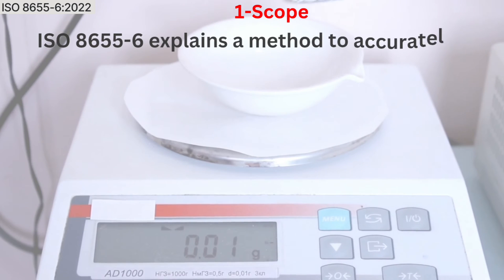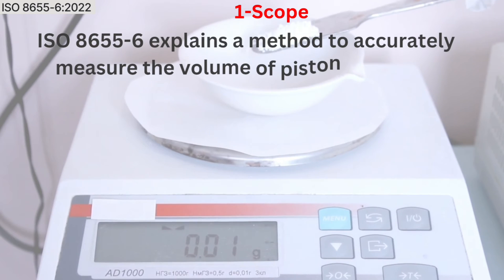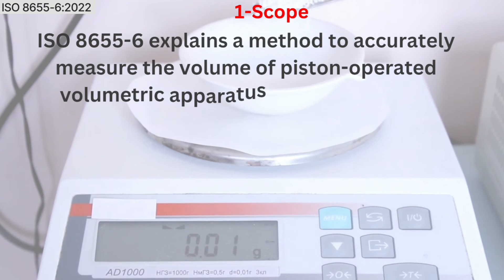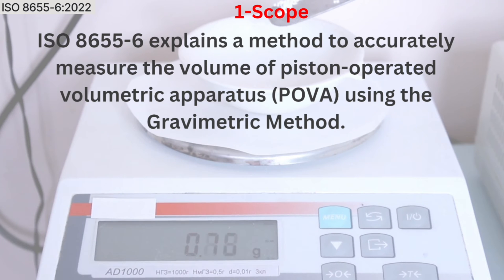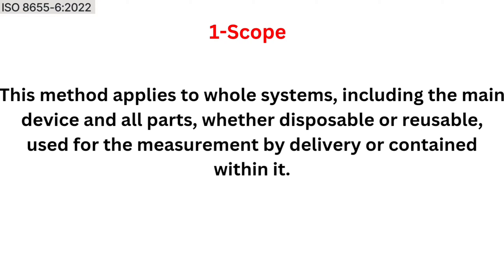Section 1, Scope: It explains a method to accurately measure the volume of piston-operated volumetric apparatus using the gravimetric method. This method applies to whole systems, including the main device and all parts, whether disposable or reusable, used for measurement by delivery or contained within it.